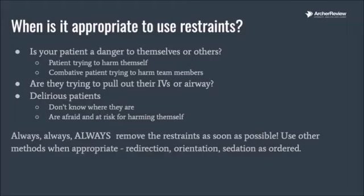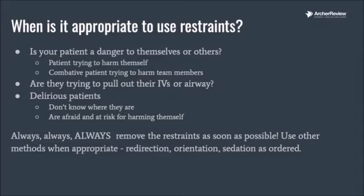Second question: are they trying to pull out their IVs, their airway, any drains, or other equipment vital to their safety? For example, if the patient is intubated with an ET tube and they're not able to breathe on their own but they're trying to pull out that breathing tube — if they pull it out and we lose that airway, that patient could code and actually die. So if they're trying to pull things out because they're delirious or disoriented, it is appropriate to use restraints. On an NCLEX question, if the stem says a patient is trying to pull out one of these types of tubes or devices, it will be appropriate to use restraints.